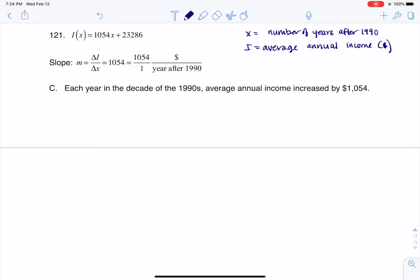So what we're trying to figure out is which of the following options - they give you A, B, C, and D - which one is the correct interpretation for the slope. Let's take a look at this and notice that we have I of X equaling 1054X plus 23,286.